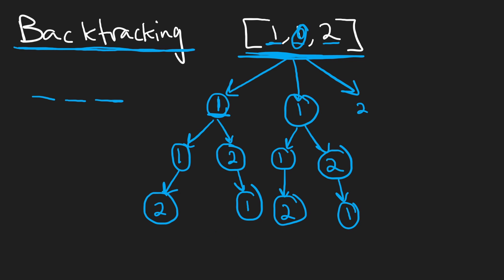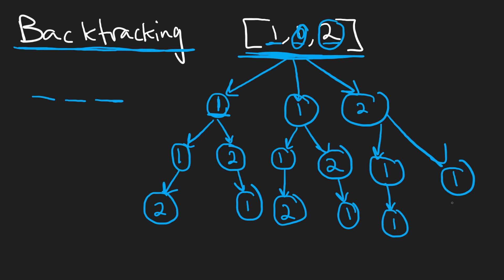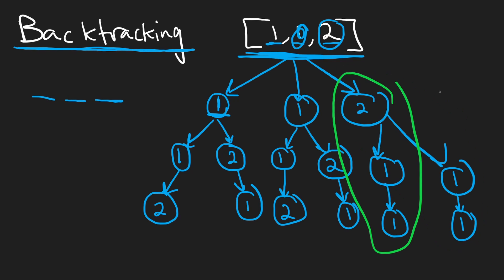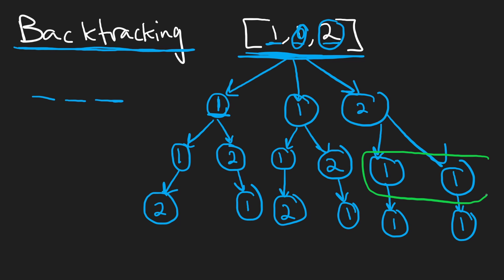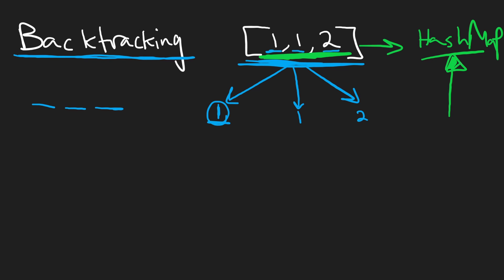This solution just does not work — we have duplicates in the output and we don't want duplicates. Even starting with a two gives us duplicates, because we can choose either of the two ones next, giving the same results along both paths. The way we're going to solve this is by modifying the input array into a hash map, and let me show you what this hash map is going to look like.